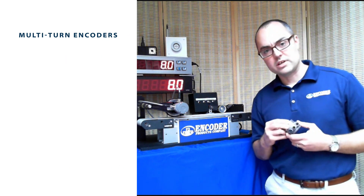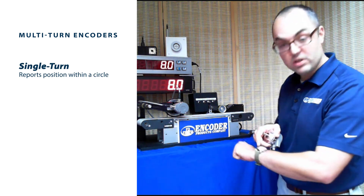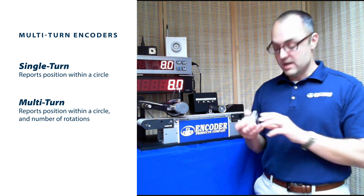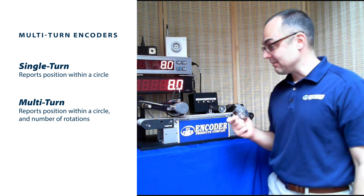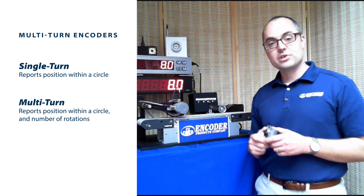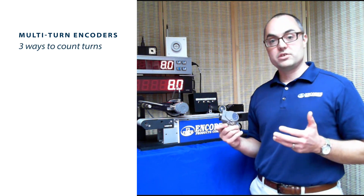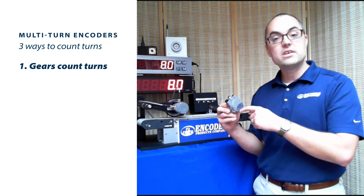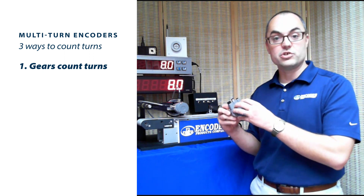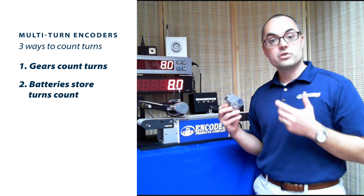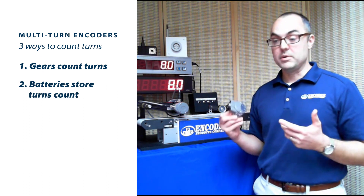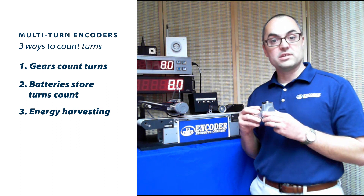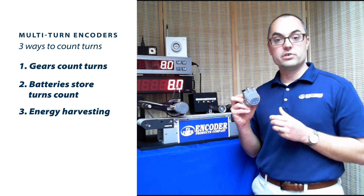An absolute encoder will give you the position within a circle, but it'll also give you the number of rotations if you select a multi-turn encoder. Multi-turn encoders are pretty special — counting turns is counting turns, but how it's accomplished is very important. There are three main ways: using gears, a battery backup system to store the count in memory, or the newest way — energy harvesting — which is what our multi-turn encoders use.